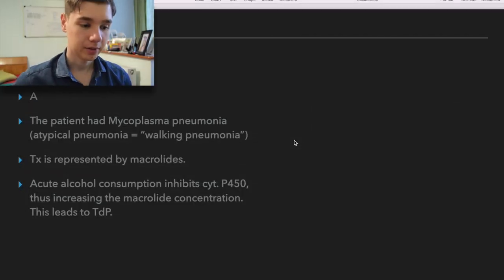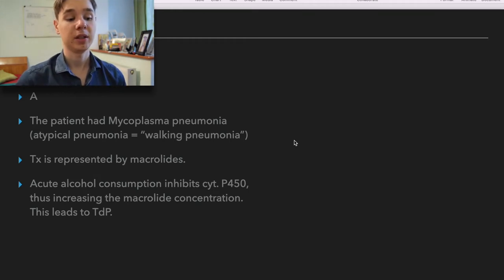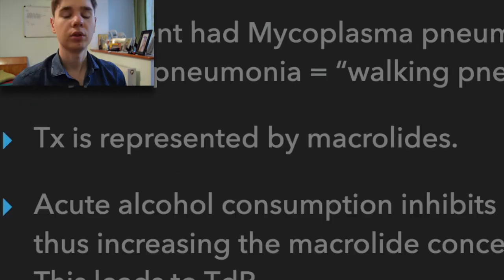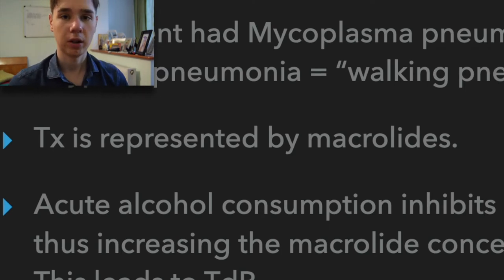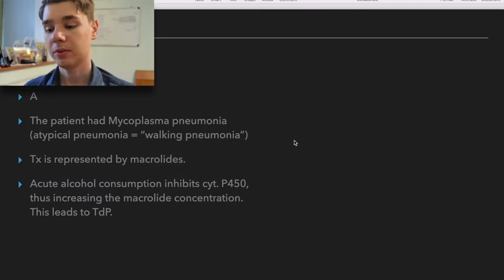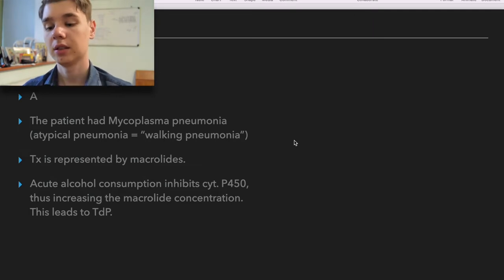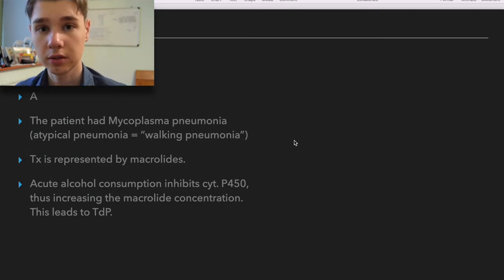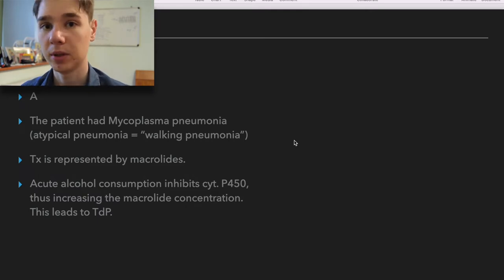The answer is A. The patient had Mycoplasma pneumoniae, which leads to atypical pneumonia, also called walking pneumonia. Treatment for Mycoplasma pneumonia is represented by macrolides. His acute alcohol consumption inhibited cytochrome P450, the enzyme responsible for macrolide metabolism. Thus, the macrolide concentration increased and led to Torsades de Pointes.